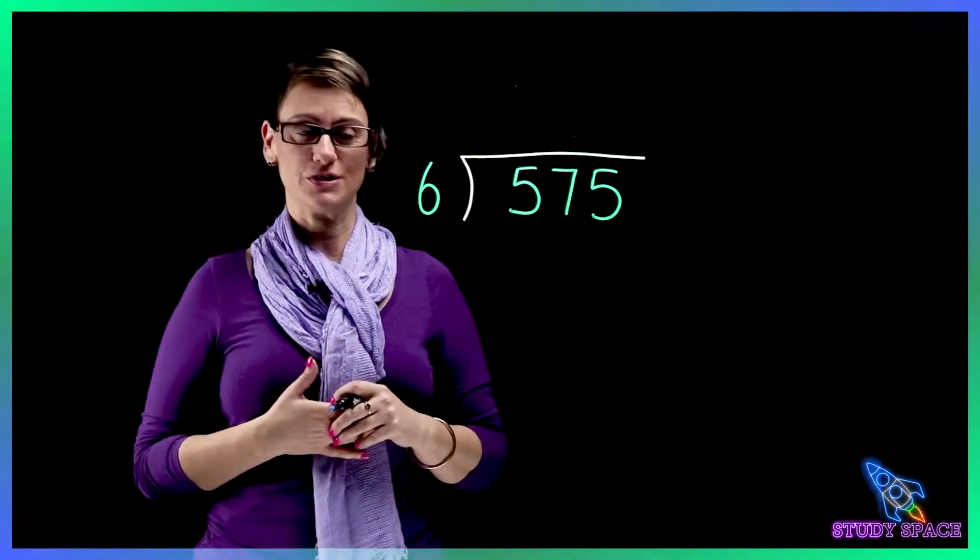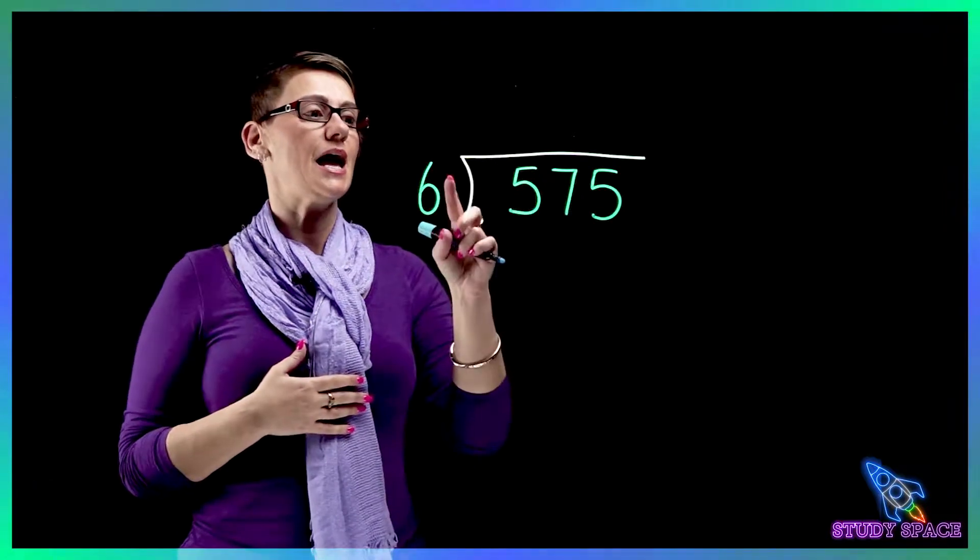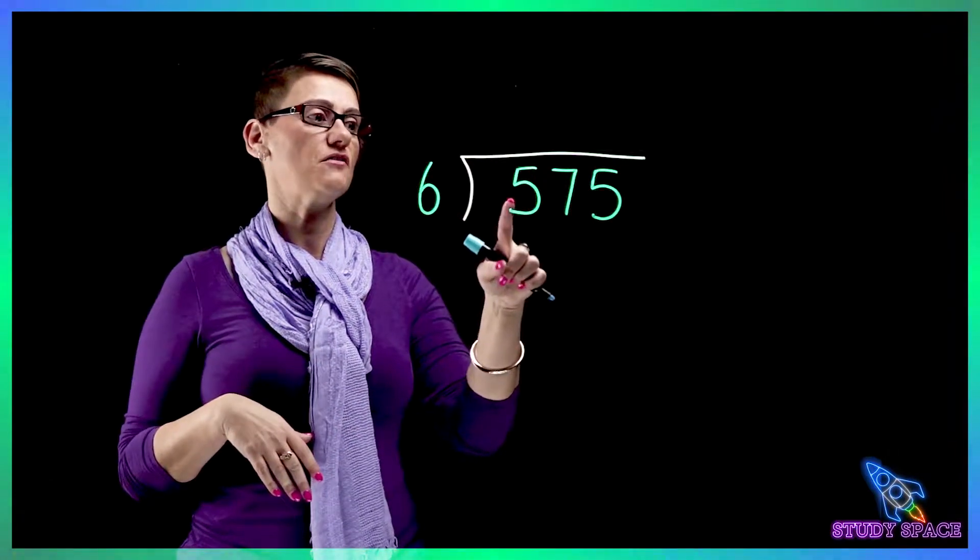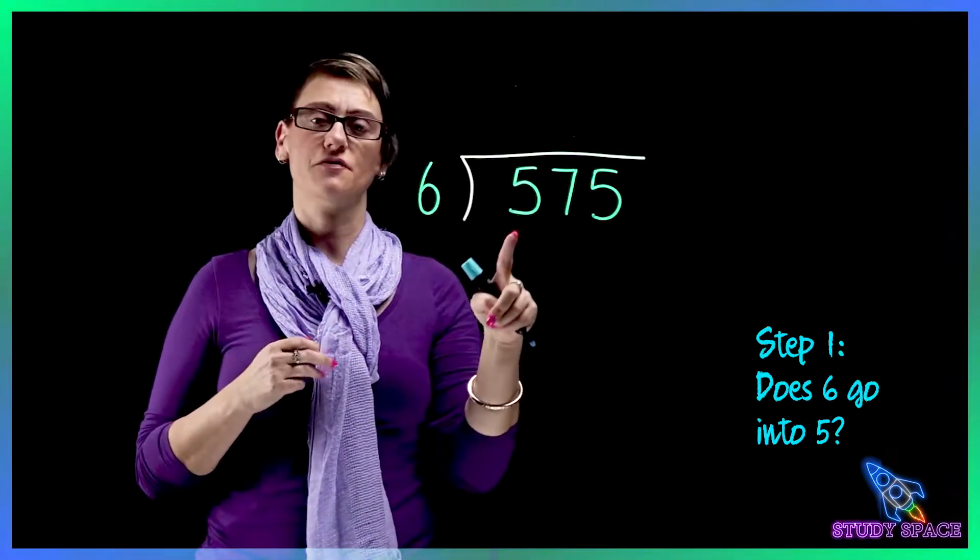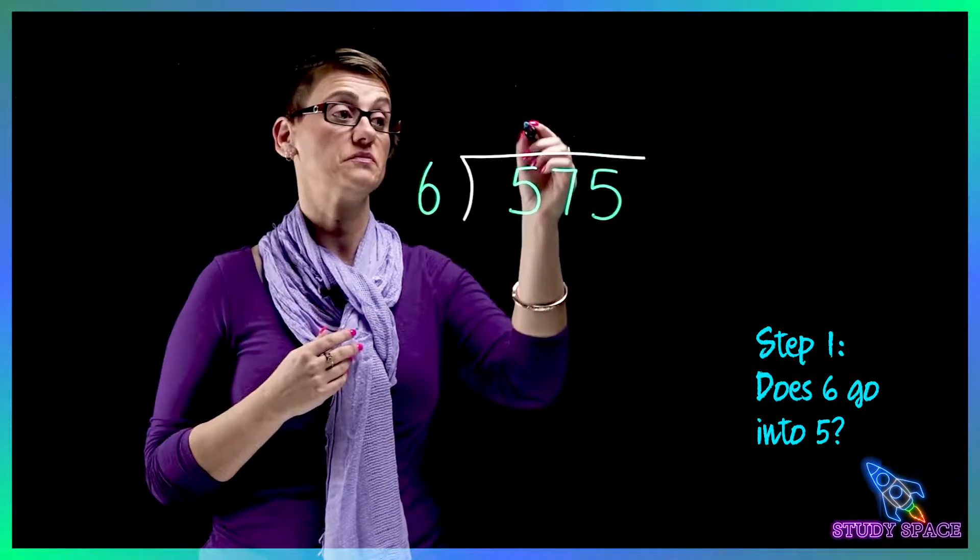Let's have a look at this example boys and girls. So it's how many sixes are in 575. So let's solve it. How many sixes are in 5? Can't do. So we'll put a dot there.